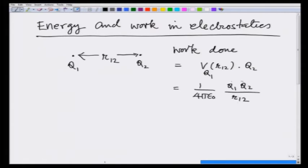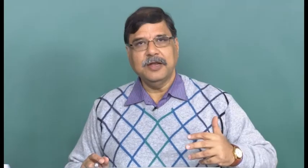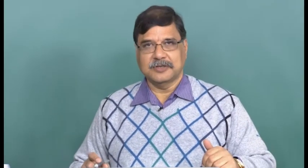You see this is symmetric in q1 and q2. So I could also have thought of this work as the work done in bringing charge q1 to a distance r12 from q2, or the work in bringing q1 in the potential of q2 at a distance r12 from q2. What we are interested in now is what happens when I bring an assembly of many many charges, and finally go to a charge distribution described by charge density rho.